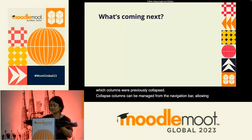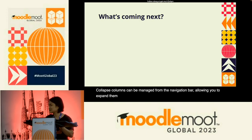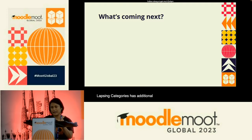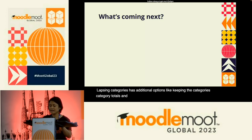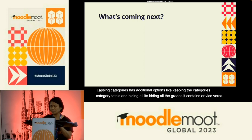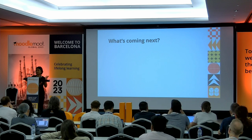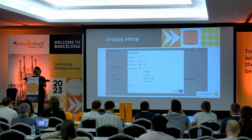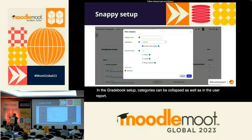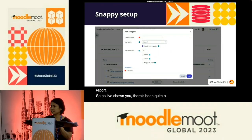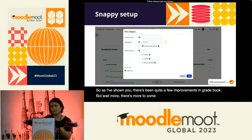There's more to come in 4.3, and here's a quick preview. In the gradebook setup, as Matt presented the other day, creating and editing items will be quicker and more straightforward. A simplified form will be presented within the gradebook setup, with advanced settings available separately — this applies to grade items, outcome items, and grade categories. Moving items around when setting up the gradebook will also become more efficient, as multiple items can be selected and moved at once.